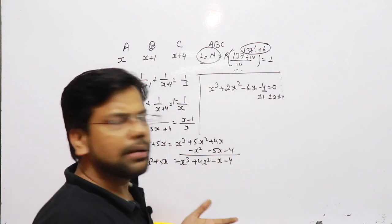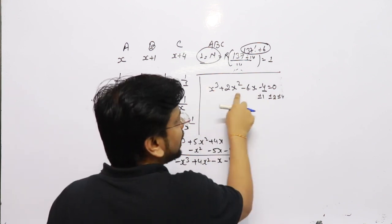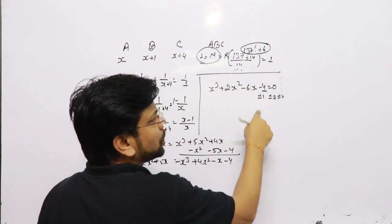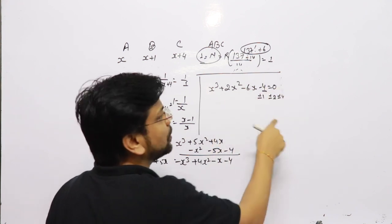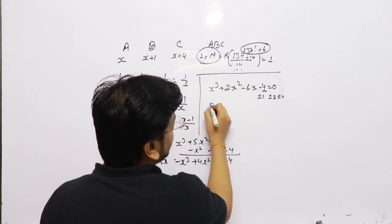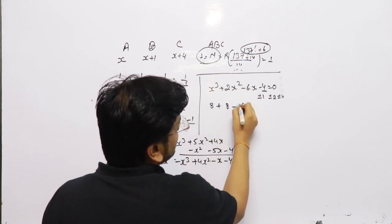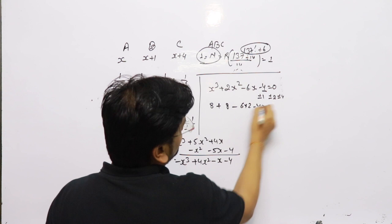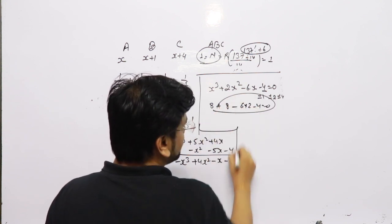One root will appear. If I put 1 I won't get 0. If I put -1 I won't get 0. But if I put 2 I am going to get 0 because 8+8-12-4 = 0. So one of the roots of this equation is x=2. So we can say x-2 is a factor.